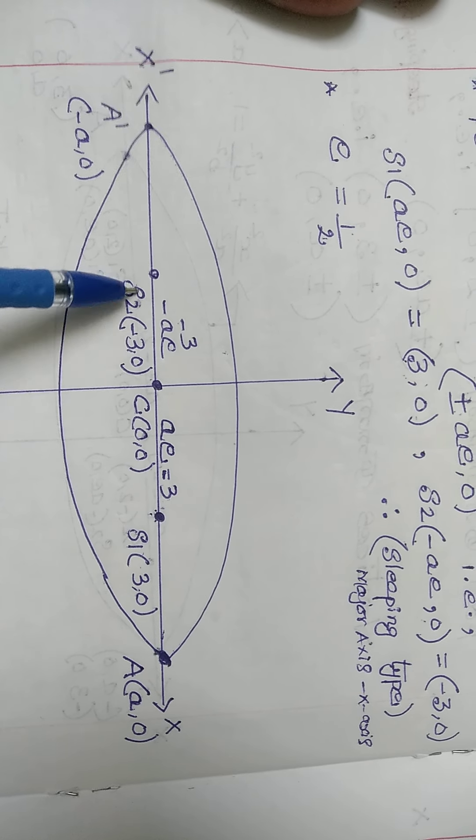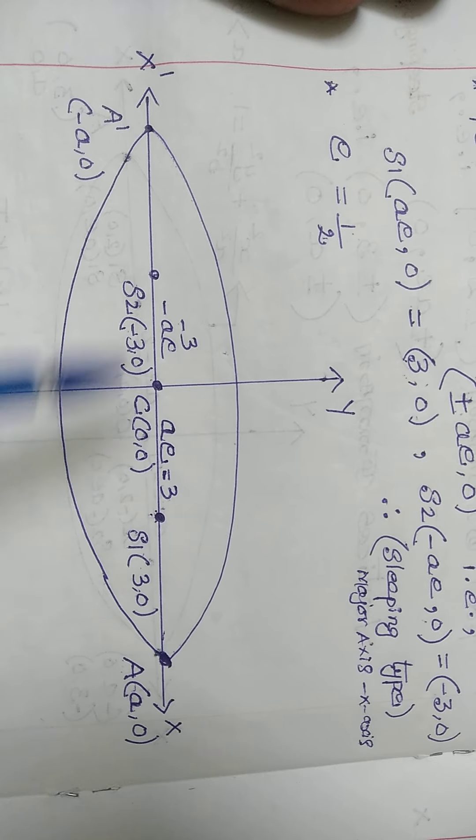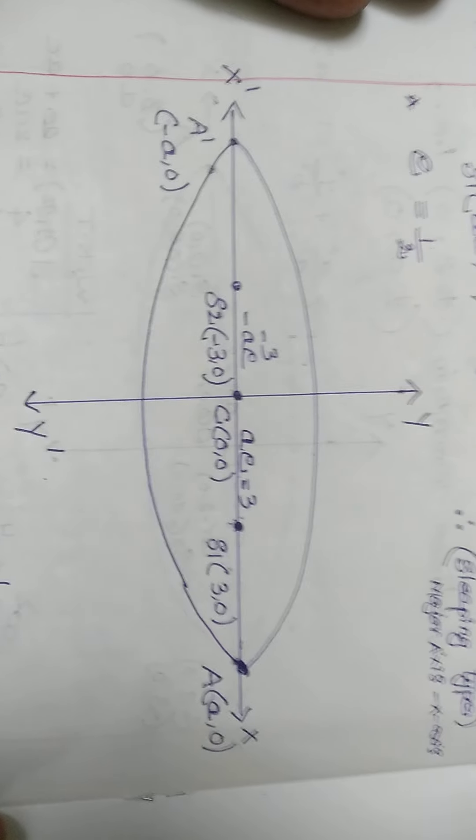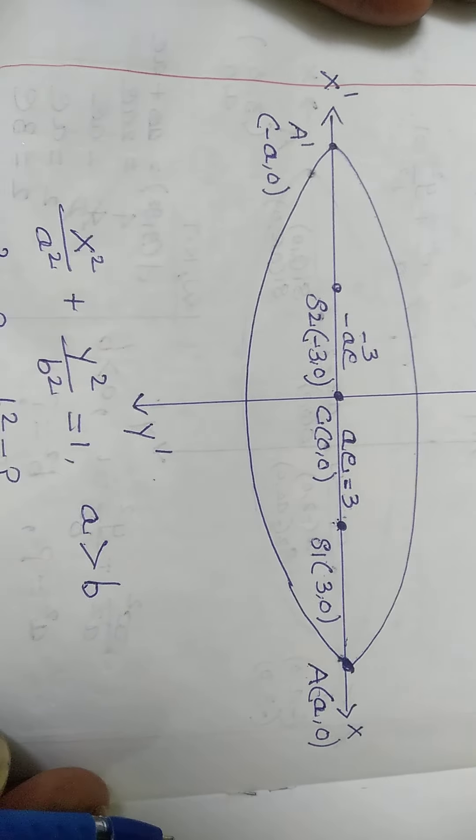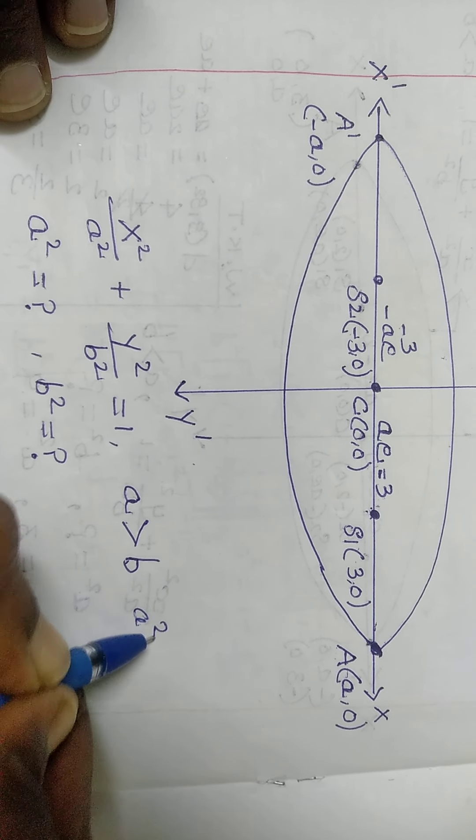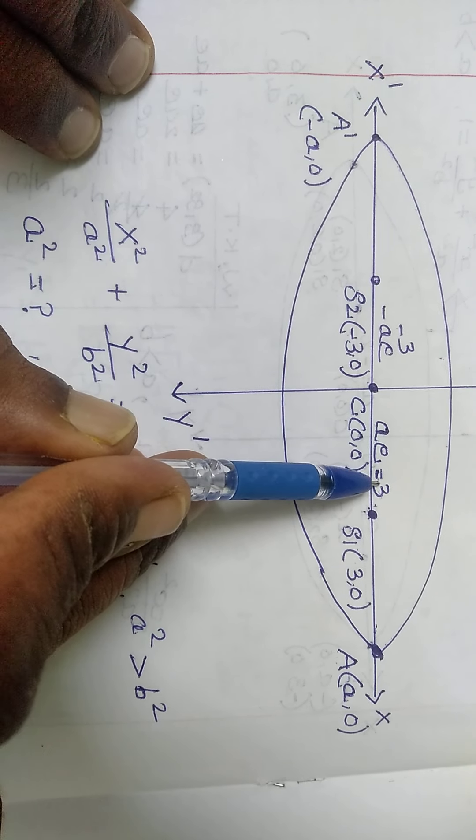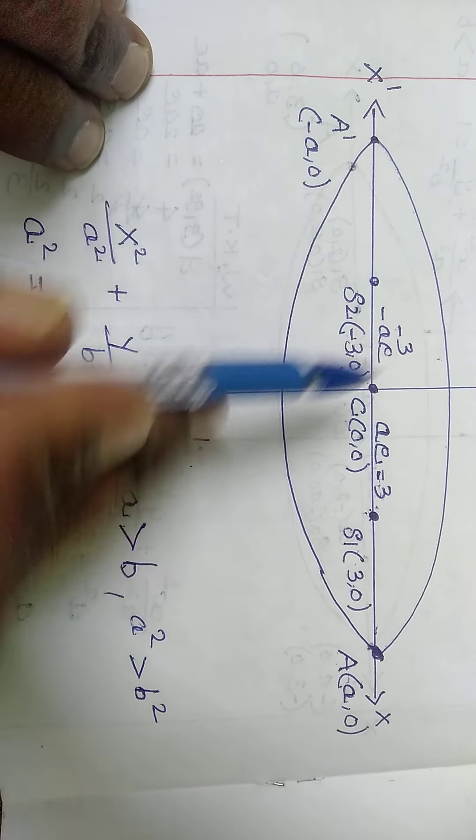S1 is 3, 0 and S2 is minus 3, 0. The vertices are the same, so the equation is x squared by a squared plus y squared by b squared equal to 1. We need to find a squared and b squared values where a squared is greater than b squared. We know ae is equal to 3.